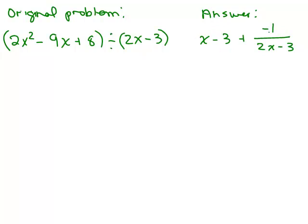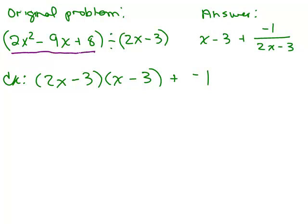So let's see if that works. 2x minus 3 times x minus 3 plus the remainder. Remember the remainder is just negative 1. It's just that thing goes up on top. Okay. Do this using the FOIL method on your own and see if you get this when you're done, right? That's what we're looking for.